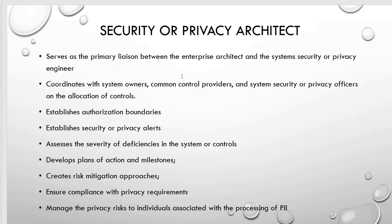Security or Privacy Architect. He serves as the primary liaison between the enterprise architect and the system security or privacy engineer. He coordinates with system owners, common control providers, and system security or privacy officers on the allocation of controls. He establishes authorization boundaries, establishes security or privacy alerts, assesses the severity of deficiencies in systems' controls, develops plan of action and milestones, creates risk mitigation approaches, ensures compliance with privacy requirements, and manages privacy risks to individuals associated with the processing of PII.